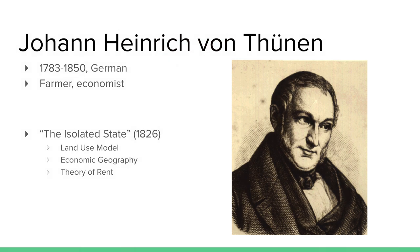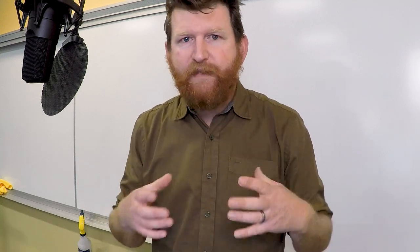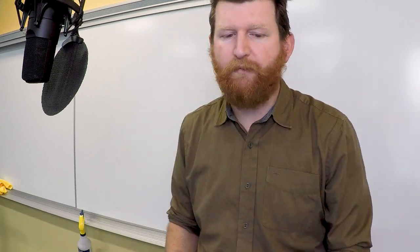Johann Heinrich von Thünen lived from 1783 to 1850. He was a German fellow — a farmer and an economist, which doesn't sound like they go together, but they actually do. Back in 1826 he wrote a publication called "The Isolated State." Basically what he did is he predicted how a city and an isolated state — remember that term — if you were all alone, like those old city-states, and you're a group of people within your city, how do you lay out your land? It's a land use model — a bit of applied common sense combined with rent theory.